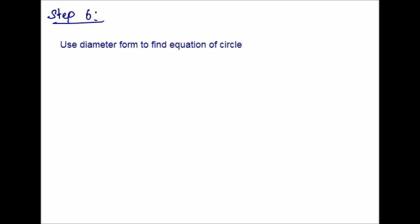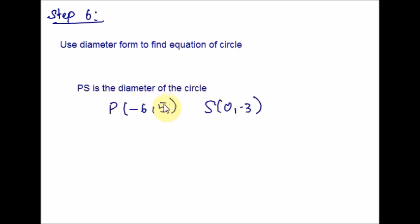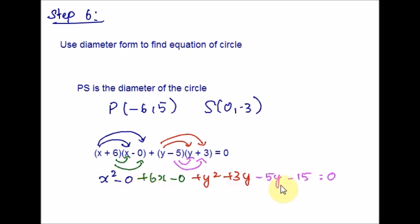Now that we have point S, we apply the converse of the angle in semicircle theorem. We can see that P, Q, R, and S are concyclic with PS as the diameter. We use the diameter form, plugging in P and S to find the equation of the circle. Simplifying and combining like terms, we obtain the equation of the circle.